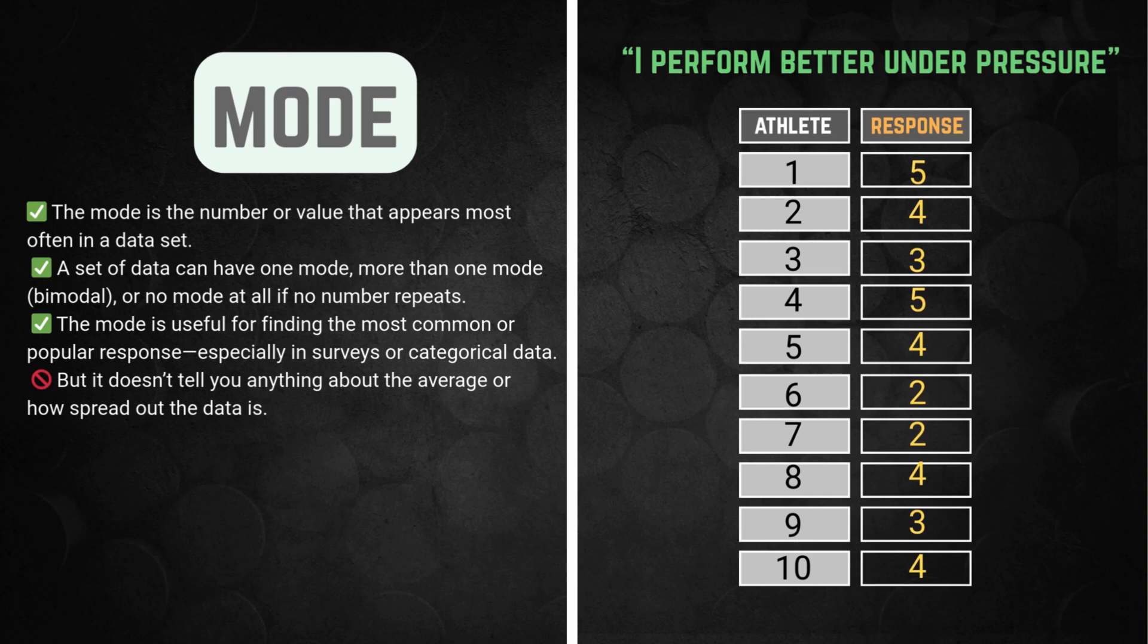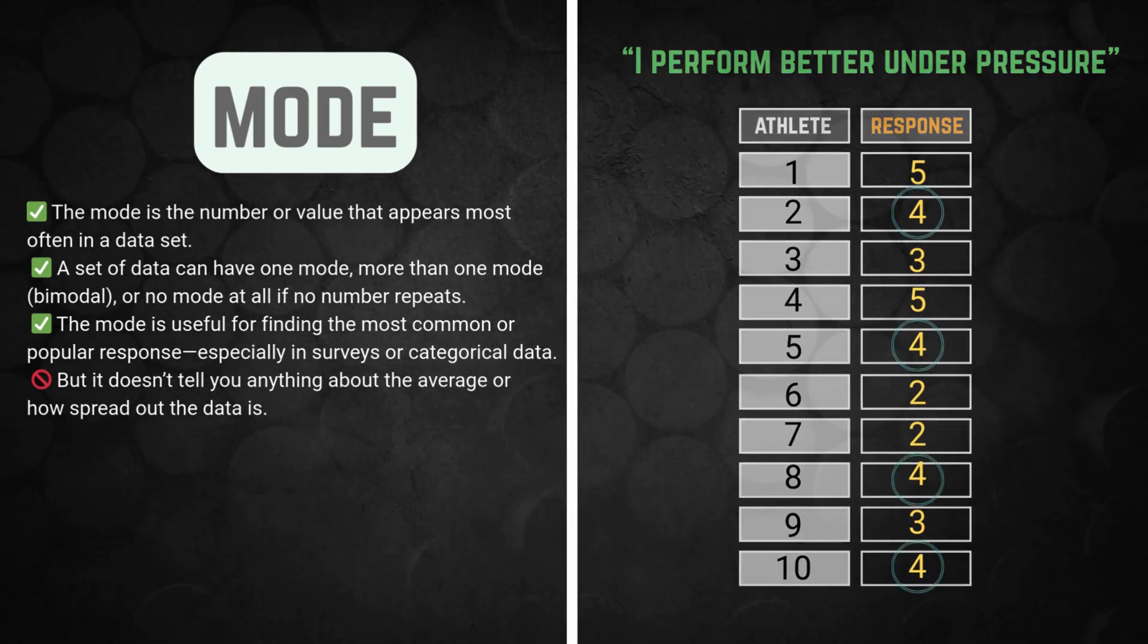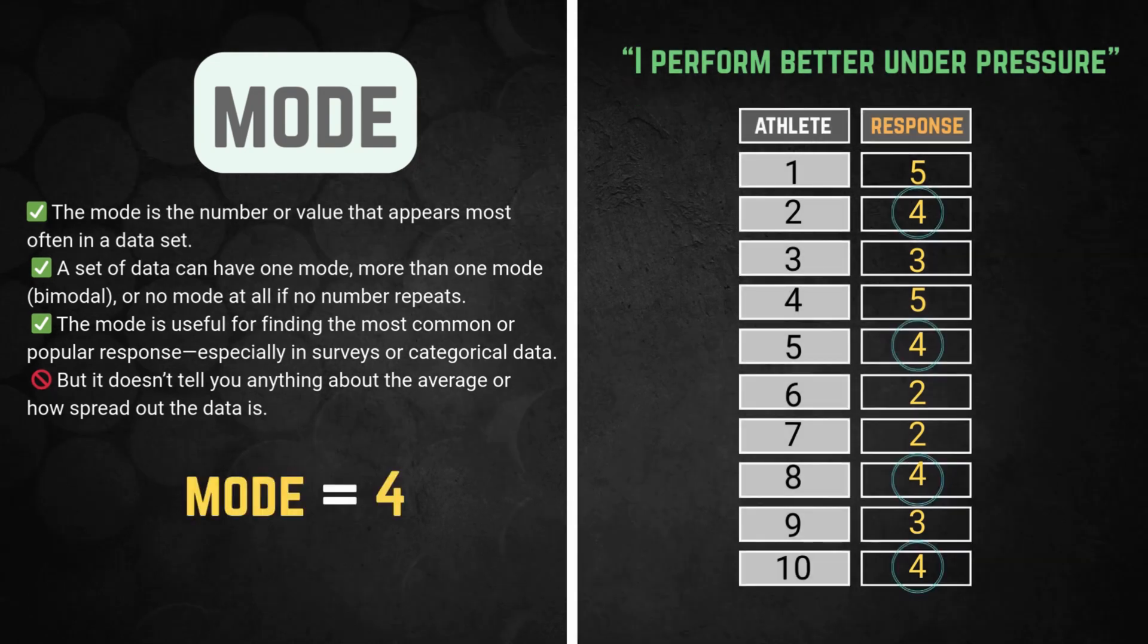And lastly, the mode. The number or value that shows up most often. It's the most popular answer in the group. Basically the homecoming queen of the dataset. In this case, the mode is four because it appears more than any other number.